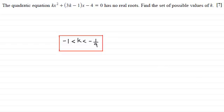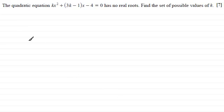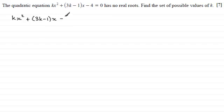But if you'd like to see how this is done, or how I approached it anyway, I'll just run through the solution. First of all, what I'd want to do is copy out the quadratic equation we're given: kx squared plus all of 3k minus 1 multiplied by x, then minus 4 equals 0.